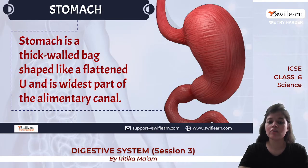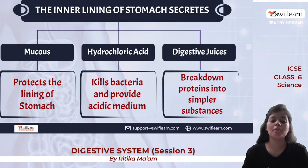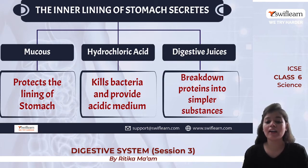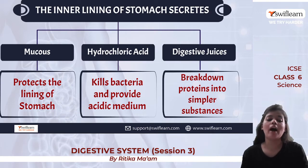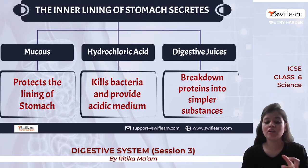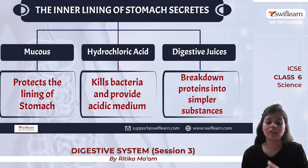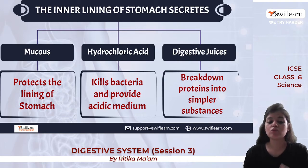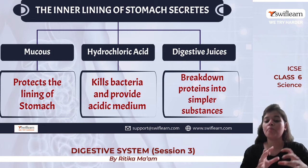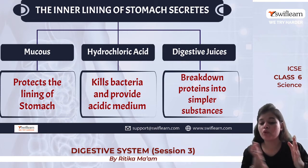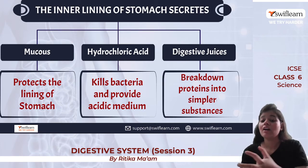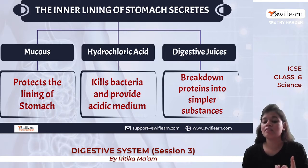The inner linings of the stomach secrete various fluids: mucus, hydrochloric acid, and digestive juices. Mucus protects the lining of the stomach from damage. Hydrochloric acid provides an acidic medium in the stomach and helps to kill bacteria. Digestive juices break down proteins into simpler substances so that they can be easily absorbed.